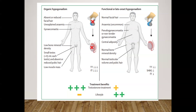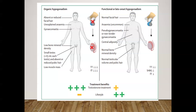In organic hypogonadism, due to a primary or secondary cause, we may see absent or reduced facial hair, unexplained anemia (making a CBC and hematocrit essential), true gynecomastia, low bone mineral density on DEXA scan, small testes less than 15 ml each, absent or reduced pubic hair, and low muscle mass. Total and free testosterone will both be very low, and testosterone treatment will definitely be of benefit.